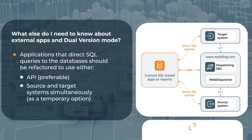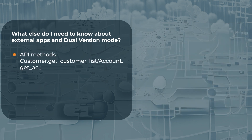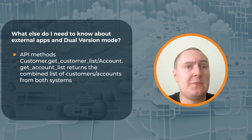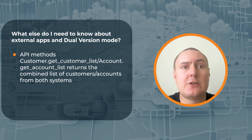You can find a link with more information about that phase in the video description. The common approach is this: there will be two report versions until the dual-version migration is over — one report will run on the source system, and the other will run on the target system. And here is the final tip: the methods GetCustomerList and GetAccountList return the combined list of customers and accounts from both systems, meaning both the source and the target. This means that your application should be ready to receive a number of records that is twice as much as the limit you specify in the request.